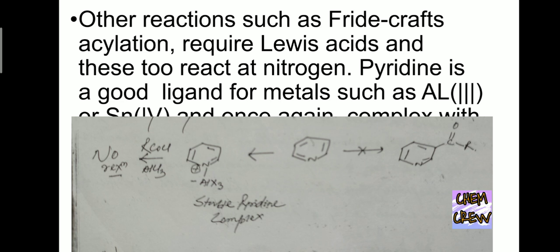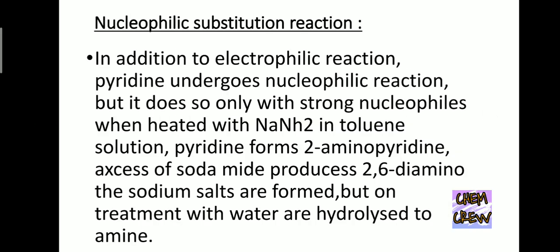You can work on nucleophilic substitution reactions in addition to electrophilic reactions with pyridine, but it does so only with strong nucleophiles. When heated with NaNH2 in toluene solution, pyridine forms 2-aminopyridine. Excess sodiumamide produces 2,6-diaminopyridine.